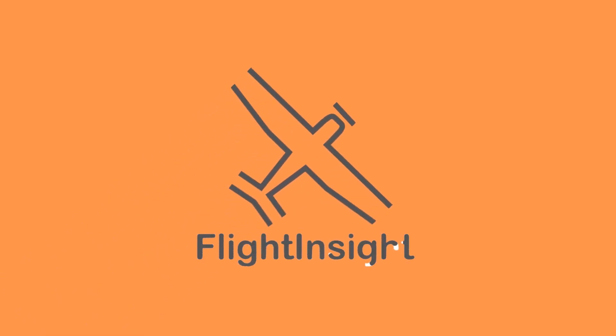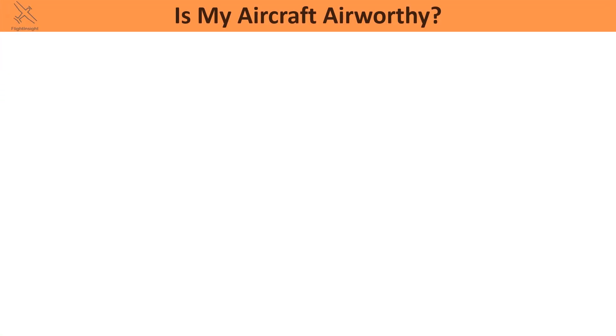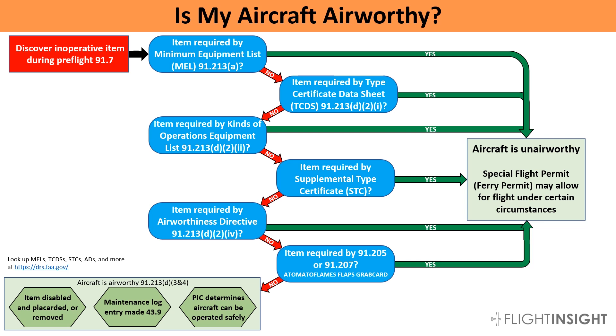Here at Flight Insight, we spend a lot of time thinking about why pilots fail checkrides. One of the biggest shortcomings in training, both for private pilots but also for any other rating, is knowing what to do about inoperative equipment in your aircraft. The simple question — is my aircraft airworthy — has a complicated answer, as shown by this new decision tree we've drawn up.